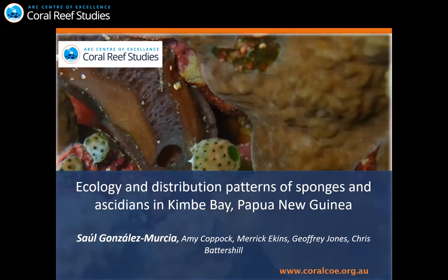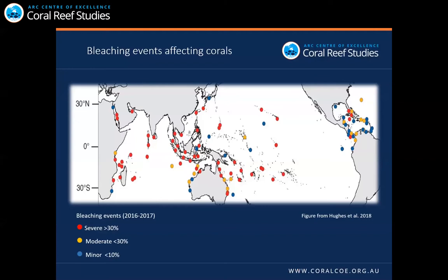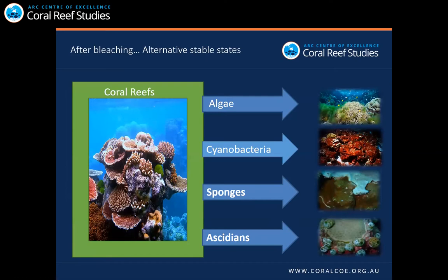As I was saying, I'm going to talk about the ecology and distribution patterns of sponges and ascidians, which is quite an unusual topic, but it's necessary because coral reefs are changing due to many stressors around the world. These stressors can impact tropical reef systems and sometimes affect up to 30% or more of corals. If they are lucky, reefs can return to the original state, but sometimes they move towards alternative stable states dominated by other organisms — including algae, cyanobacteria, sponges, and ascidians.